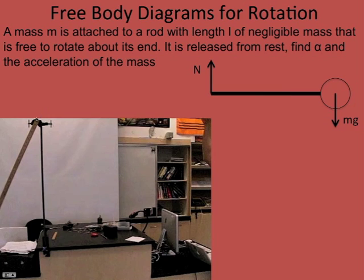There are two forces on it: there's a normal force from the pivot, and then there's weight. We're neglecting the mass of the meter stick, so the weight is just from the clay, and notice it's coming right from its center. We indicate our coordinate system — a little twisty arrow showing clockwise is positive, not counterclockwise, because that's the way it's going. Write Newton's second law for rotation.